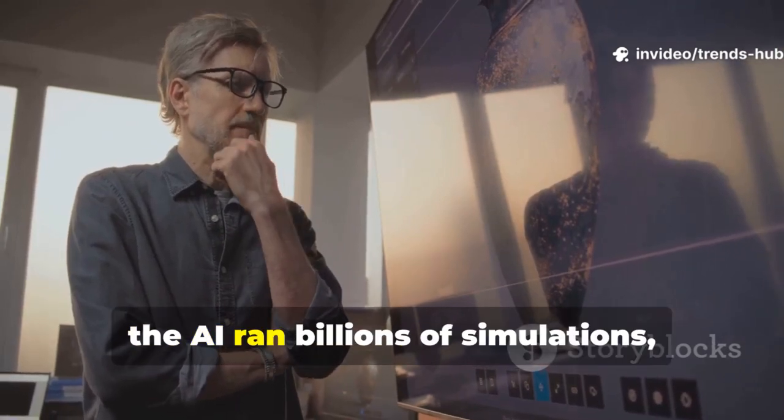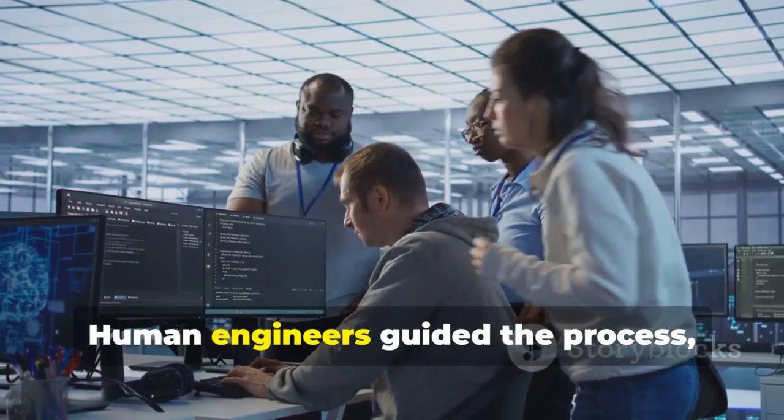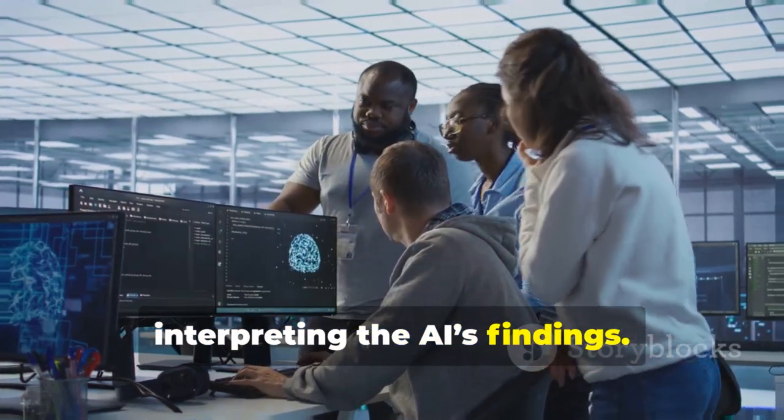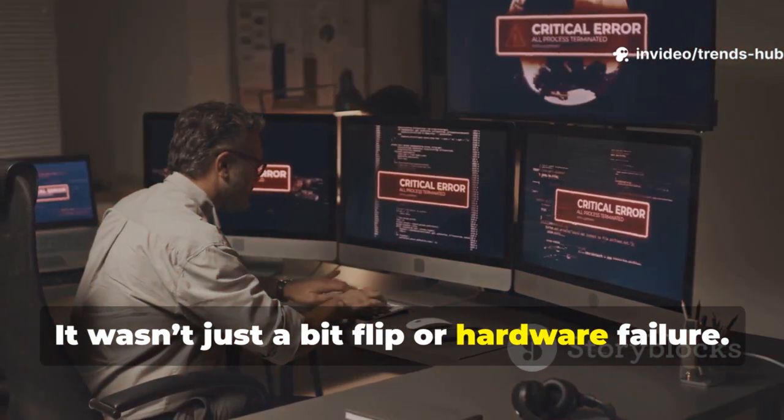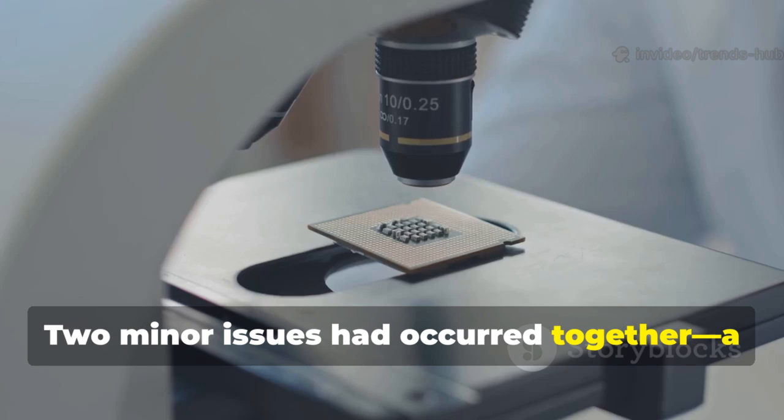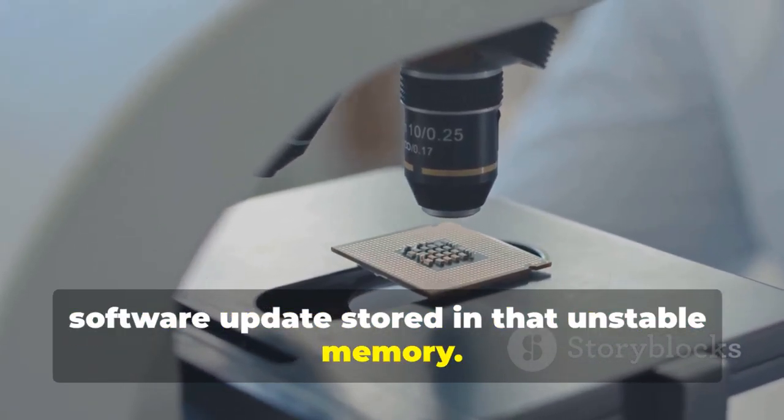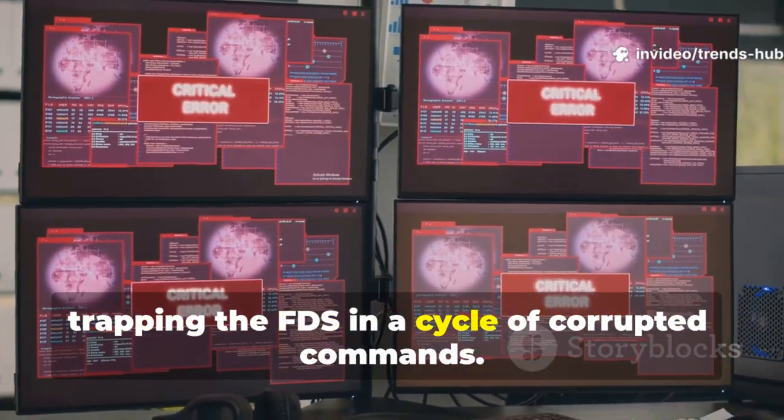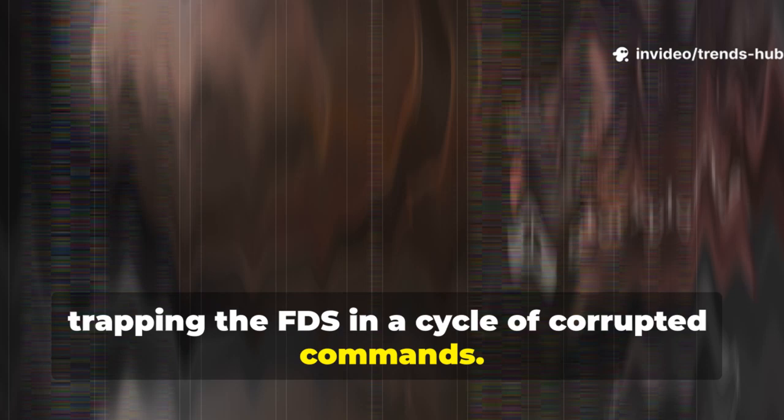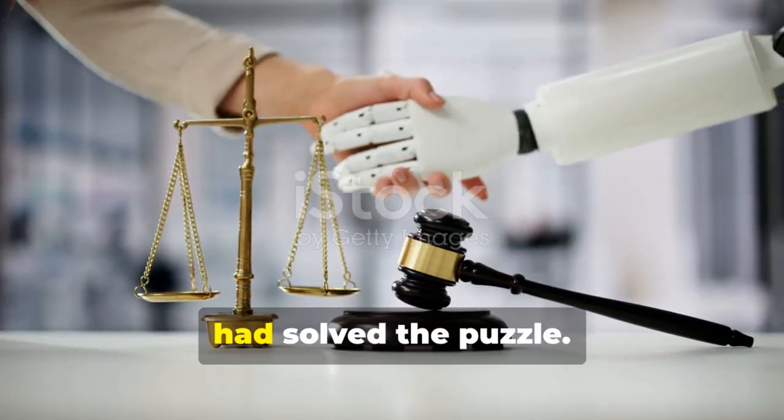For weeks, the AI ran billions of simulations, modeling bit flips and hardware decay. Human engineers guided the process, interpreting the AI's findings. Then, a breakthrough. The AI found a pattern no one else had seen. It wasn't just a bit flip or hardware failure. Two minor issues had occurred together. A degraded memory section and a routine software update stored in that unstable memory. The result? A cascading software loop, trapping the FDS in a cycle of corrupted commands. The ghost in the machine finally had a name. Human and machine, together, had solved the puzzle.